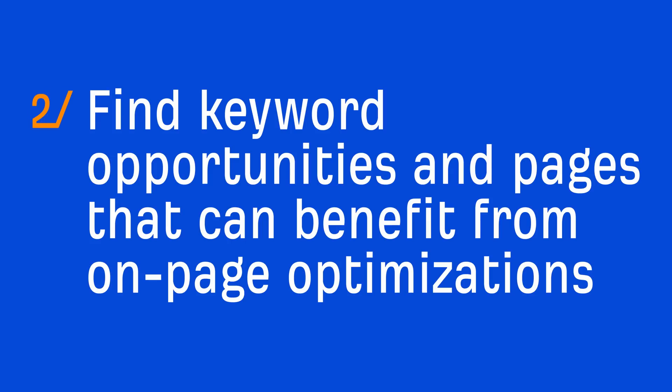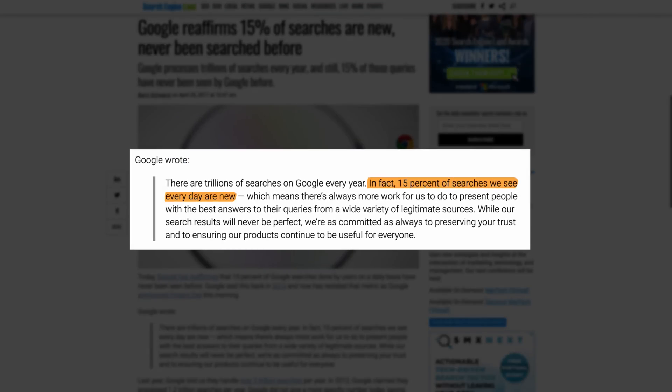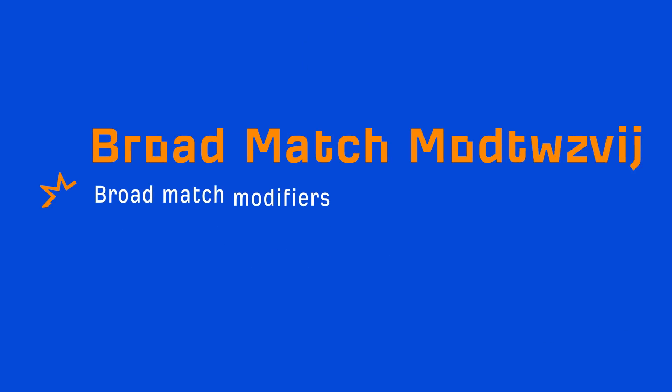The next use case is to find keyword opportunities as well as pages that can benefit from on-page optimizations. According to Google, 15% of queries they see every day have never been seen before. That means billions of queries are going unnoticed, and if Google doesn't even know them, third-party keyword research tools probably won't either. To set yourself up for success, you can try bidding on keywords using broad match modifiers.